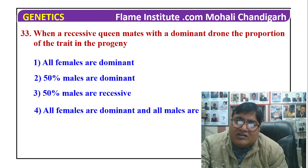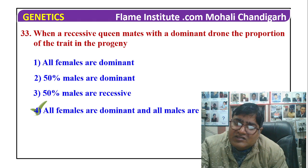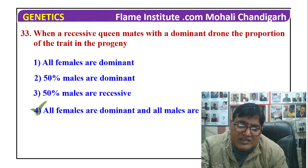With a dominant drone, the proportion of the trait in the progeny's answer is: all females are dominant and all males are recessive.